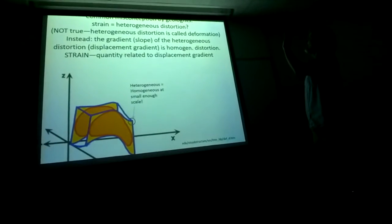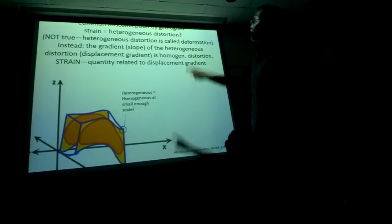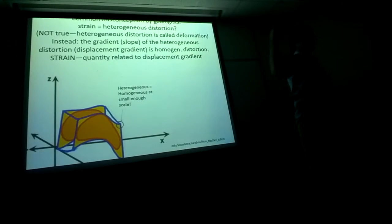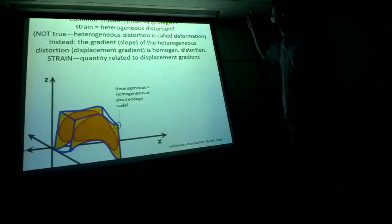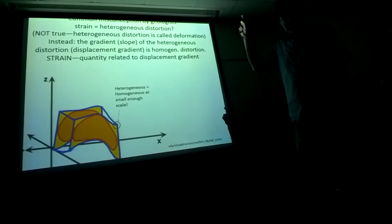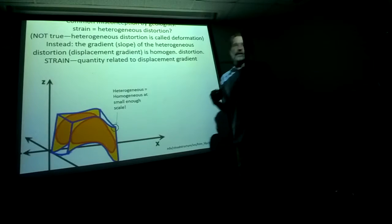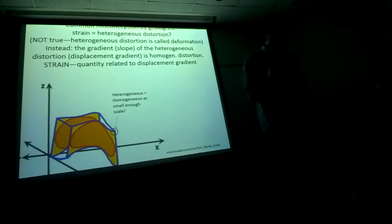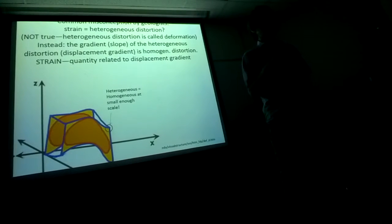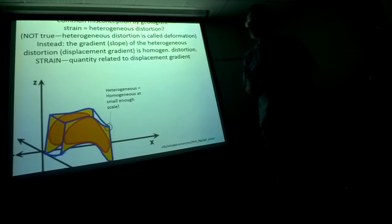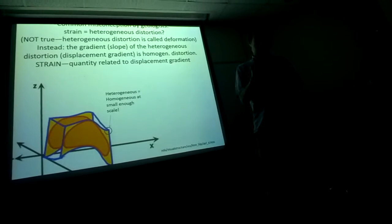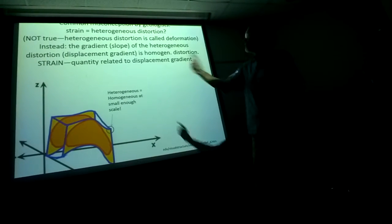Why did I put this here? Oh, because many geologists, you can't read it off the top of the screen, common misconception by geologists. A lot of geologists don't understand, don't necessarily understand strain in general, but they don't understand this distinction between heterogeneous distortion and homogeneous distortion. Heterogeneous distortion is just general deformation, and homogeneous distortion is the quantity we call strain.